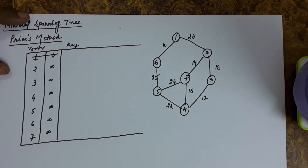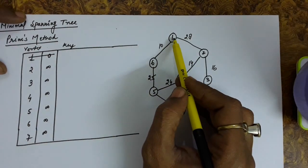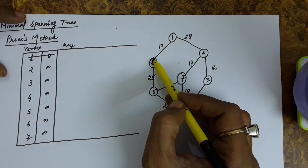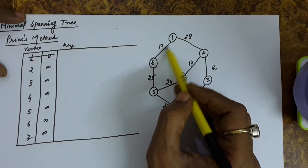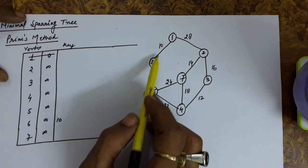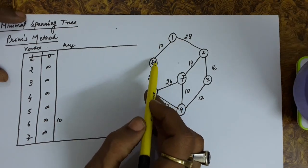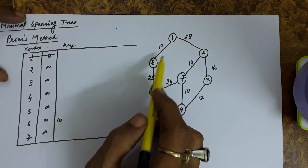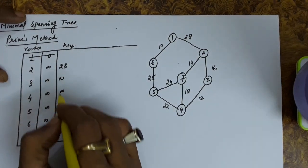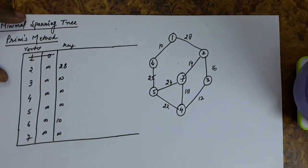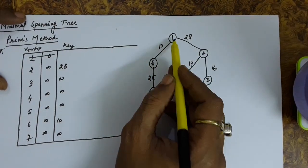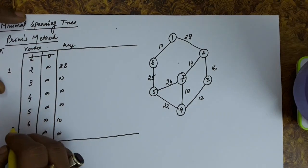Let us see the connections from vertex 1. In the graph, the connections from 1 are to 6 and 2. The edge cost from 1 to 6 is 10, so we set the key value of 6 as 10. The key value of 2 will be set as 28. The rest of the vertices remain with key value infinite. We also set the predecessor of 2 and 6 as 1, since both were explored from vertex 1.